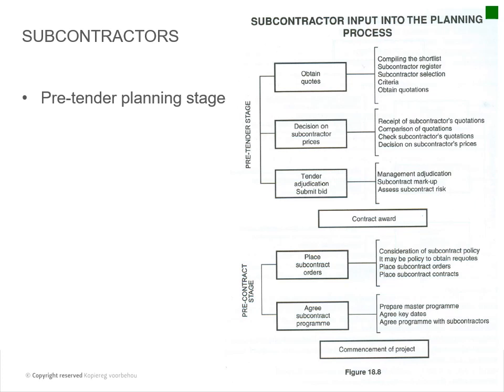Now we get to subcontractors, which is very important. You've got subcontractors, pre-subcontractor planning, and then during-construction planning. You need to compile a shortlist, a subcontractors register, subcontractor selection criteria, and obtain quotations. If it's a large company, those subcontractors usually have to be on their vendor lists. If it's something specialized, there's a whole lot of red tape to get quotes from other contractors and get them onto their registers.